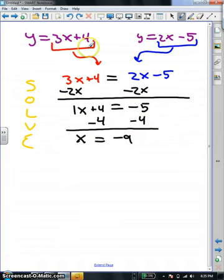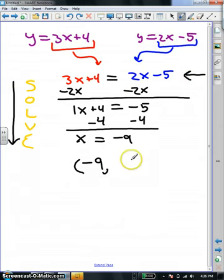So we took the mx plus b from one equation, set it equal to the mx plus b from the other equation to come up with our new equation, our substituted equation. Then we solved, and we got x equals negative 9. The problem is, that's only half of the answer. Remember, the answer to a system of equations is always an x comma y point. We just found the x value. We still need the y.